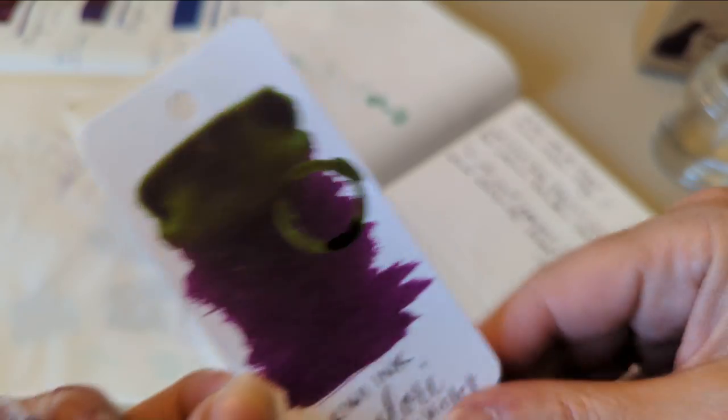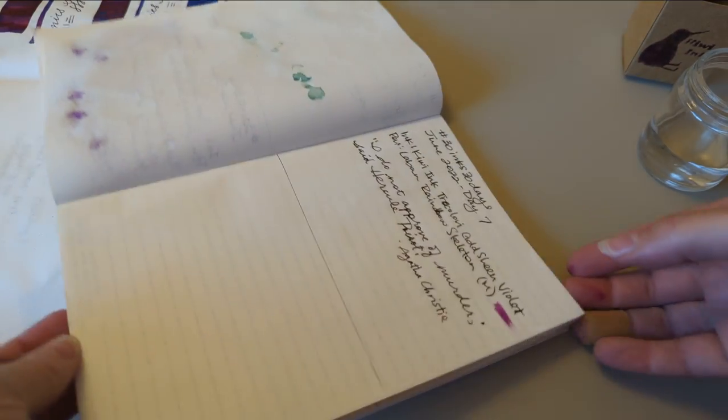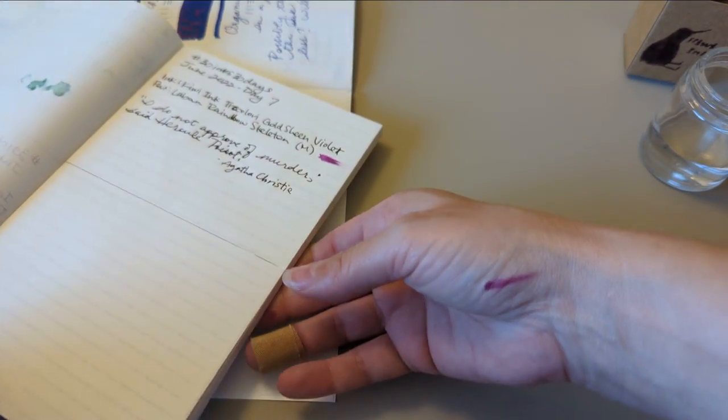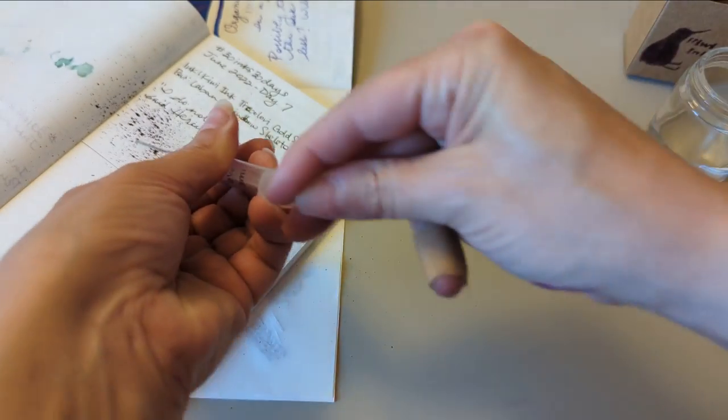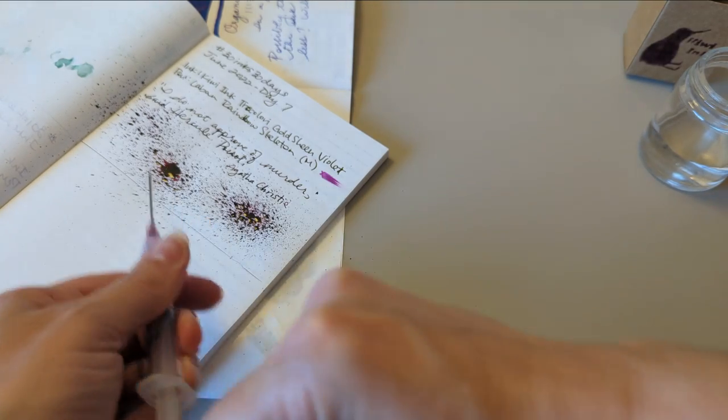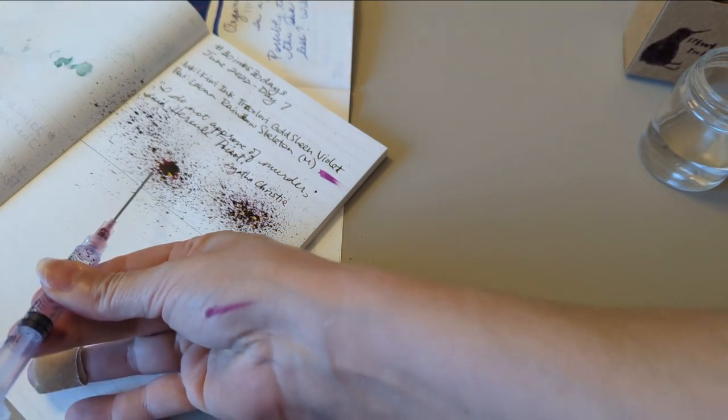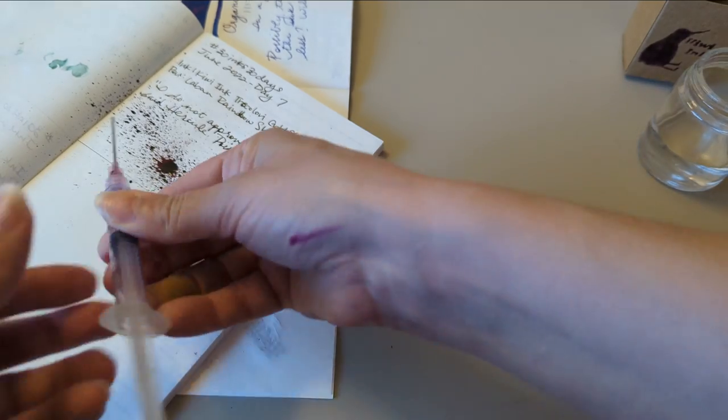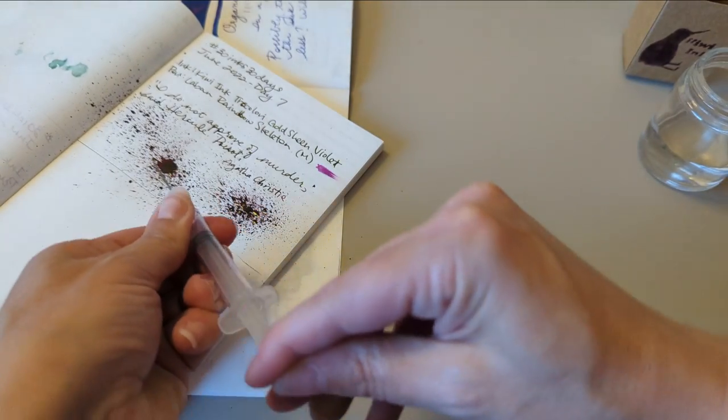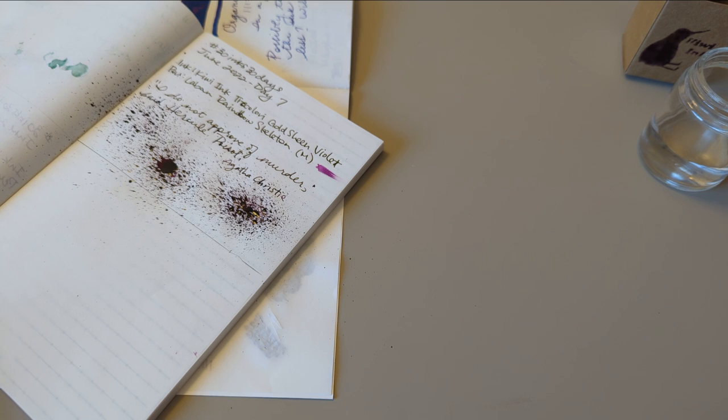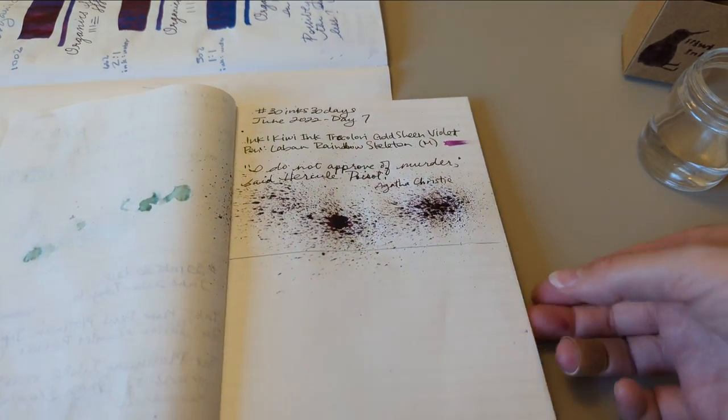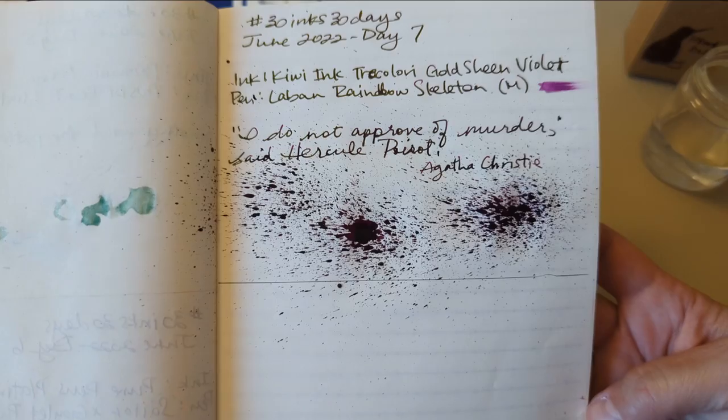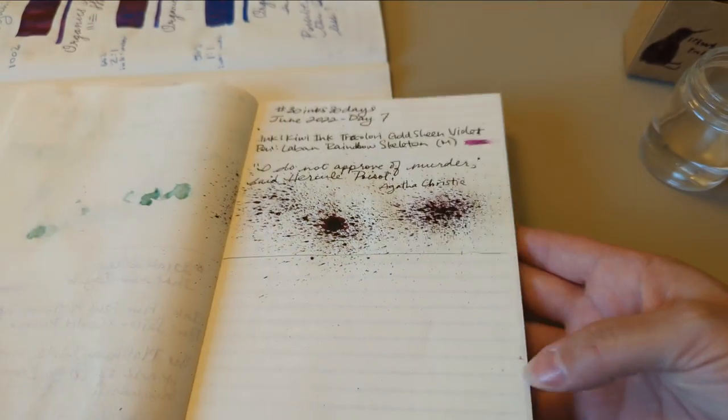Feel very pleased with this. I feel like this doesn't do a great job at blowing air out to move it around. That's fine. So, here we go for Day 7. Kiwi ink. Tray. Calori. Gold. Sheen. Violet.